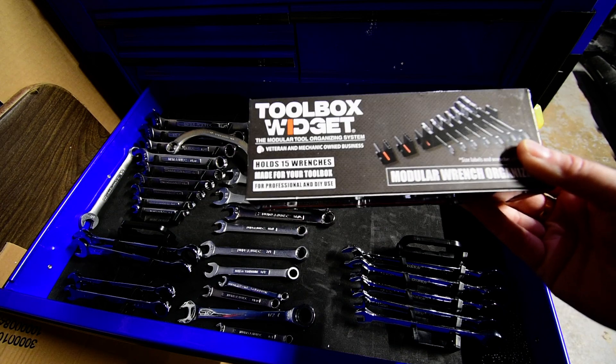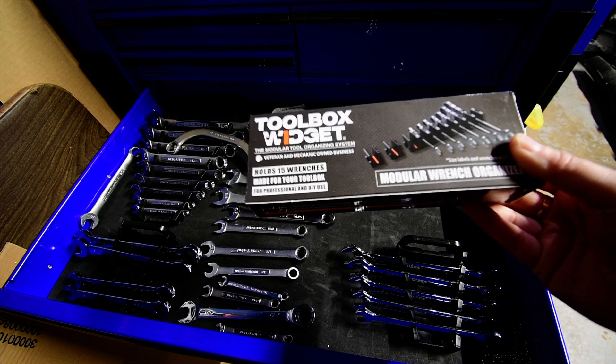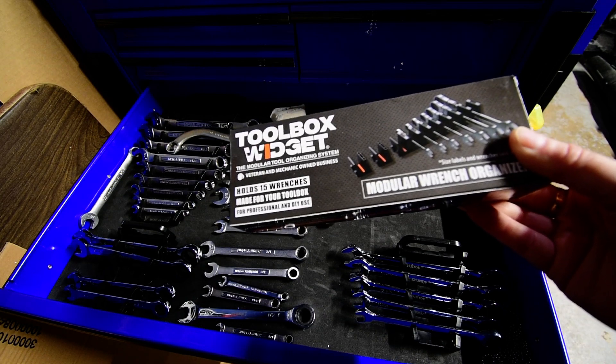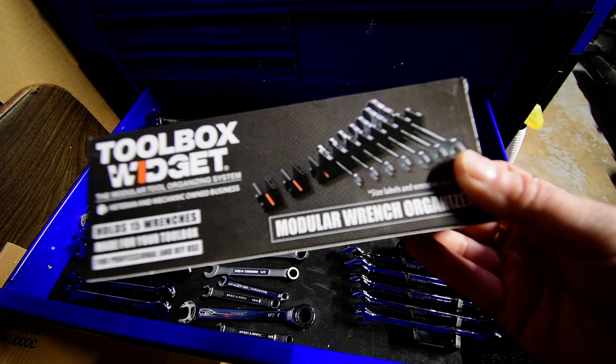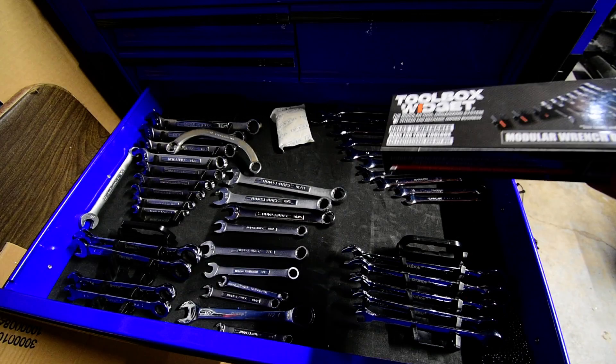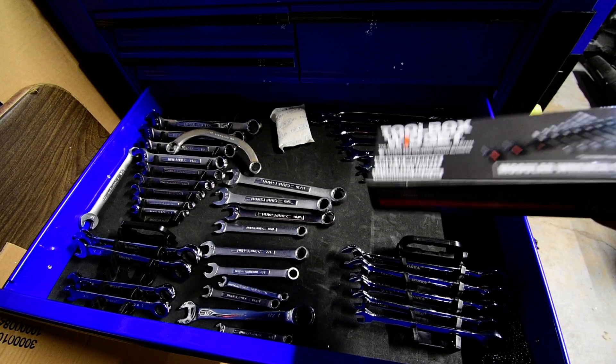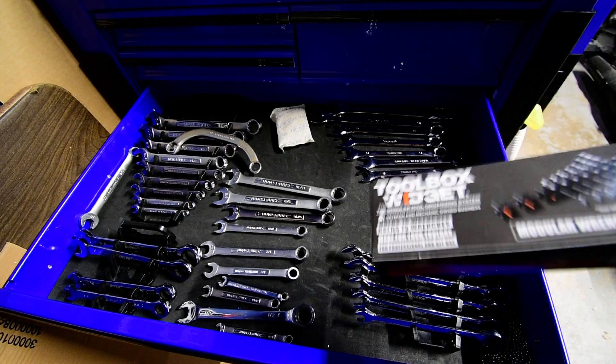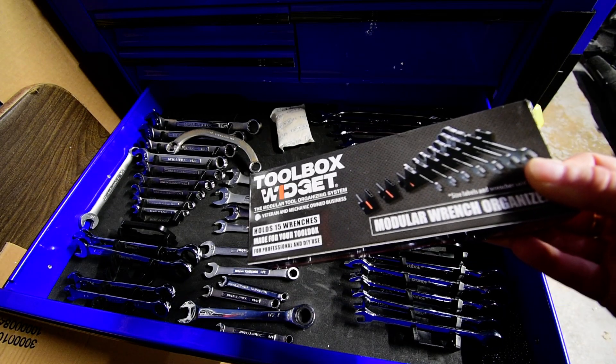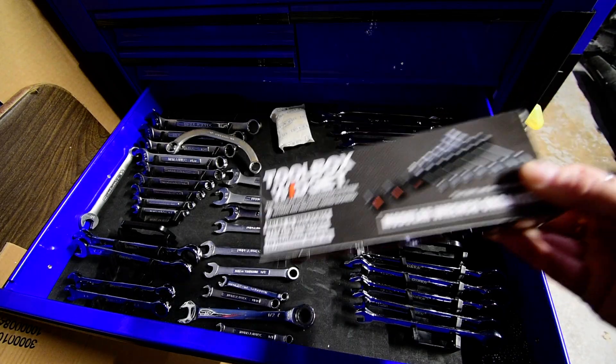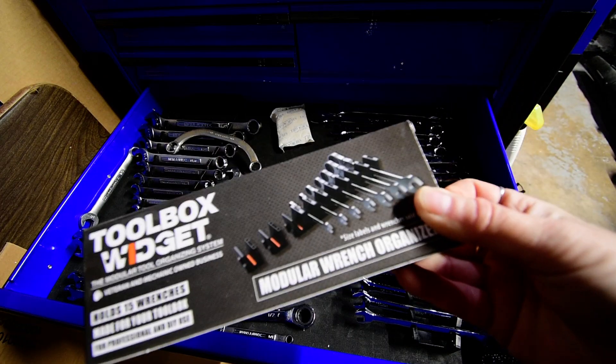They're plastic and they're magnetic. They hold 15 wrenches it says, and they're modular as you can see from the box. They're supposed to save you like 20 or 30 percent space in your box. So I'm like cool, I like space, and these look a lot smaller than those racks.